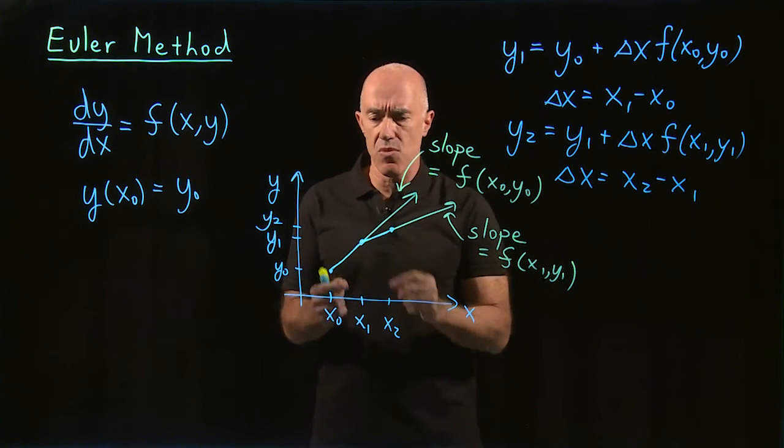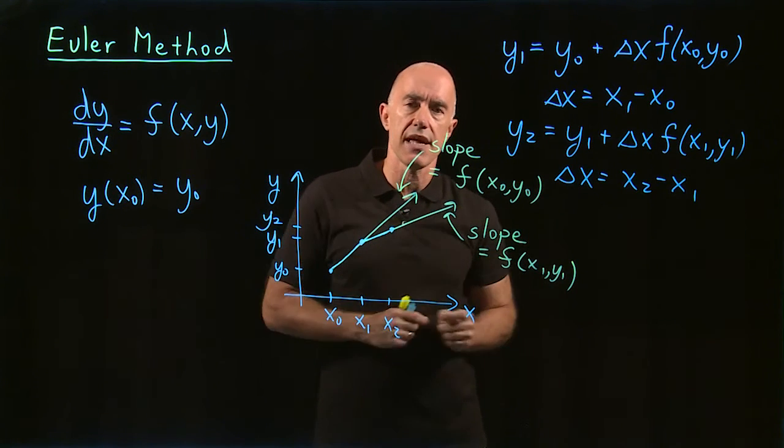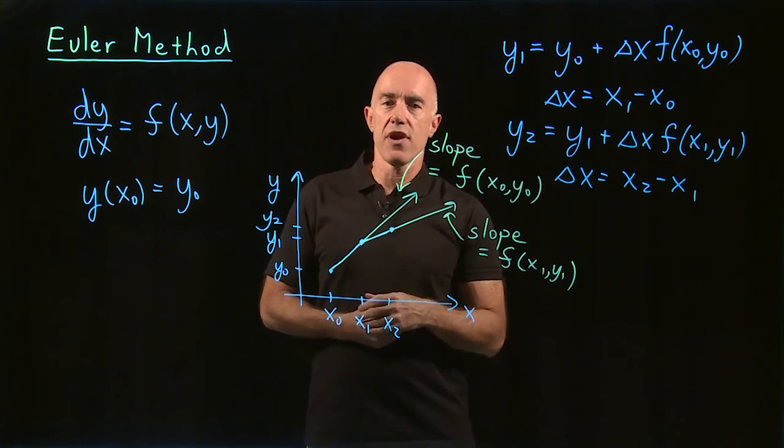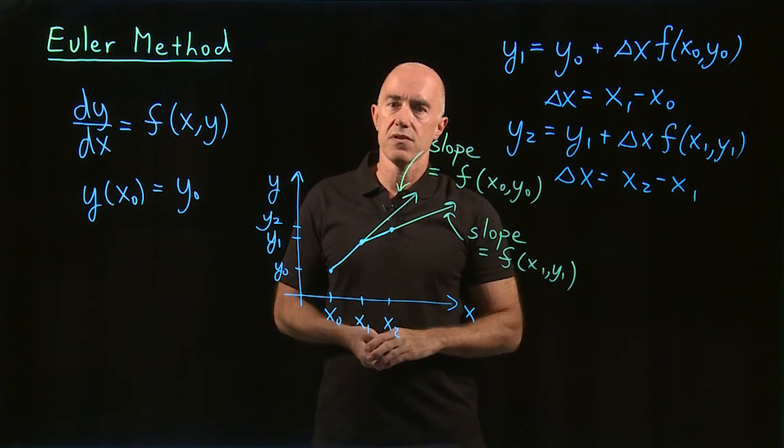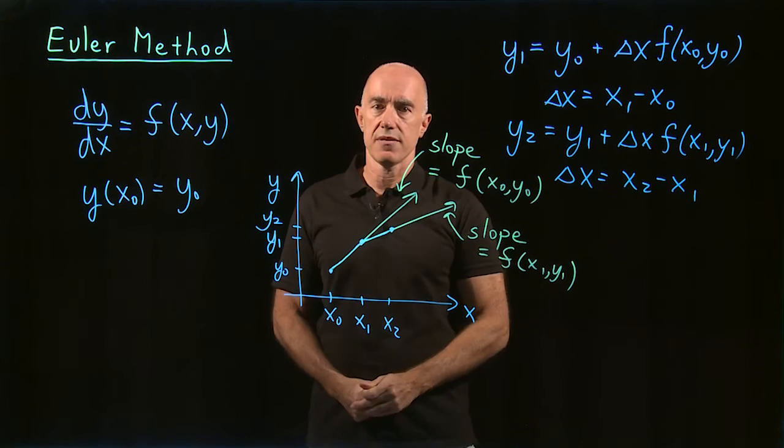So if delta x is small enough, you'll have these line segments that are all glued together. If you look at the graph, it will just look like a curve. You won't be able to see the line segment. And that will be the solution.